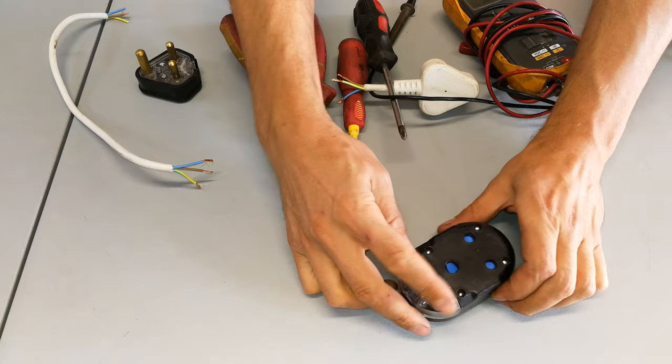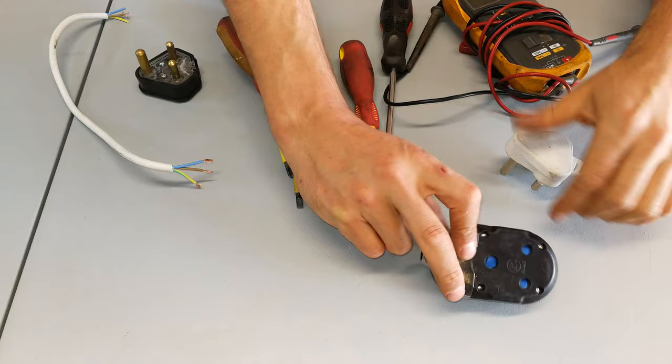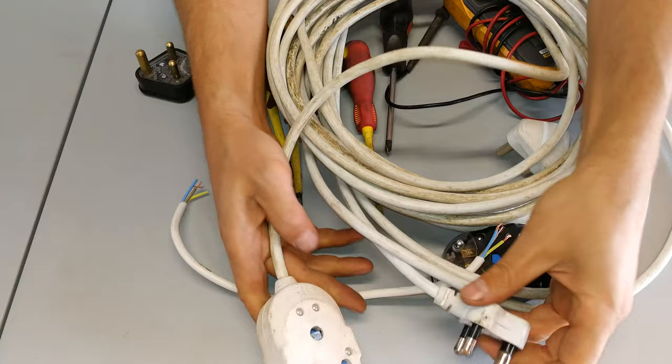Hi, in this video I'm going to demonstrate how to wire a Janus coupler. This is called a Janus coupler. As you can see, it's basically a double adapter with an extension lead.